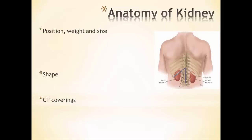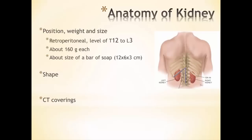If we look at the anatomy of the kidney, position-wise it's considered to be retroperitoneal. That means that it's behind the peritoneal, specifically the parietal peritoneum, at about the level of T12 through L3. So it's tucked just at the bottom part of our ribs. Also notice that the right kidney is slightly lower than the left kidney — that's because the liver on the right side is kind of pushing that kidney down a little bit.